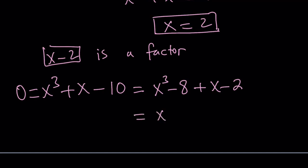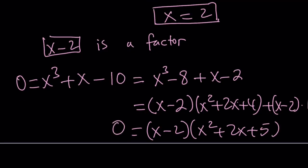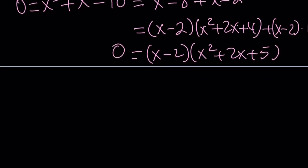So this is factorable by a difference of 2 cubes. So x minus 2 times x squared plus 2x plus 4, and then plus x minus 2 times 1. And now we can go ahead and take out x minus 2. And then we get x squared plus 2x plus 5. And this is equal to 0. And we already know x equals 2 is a solution, so let's go ahead and focus on the other one. x squared plus 2x plus 5 equals 0.